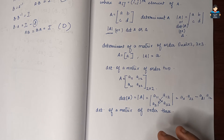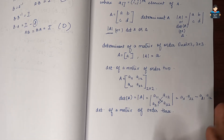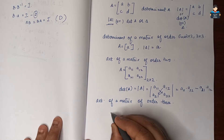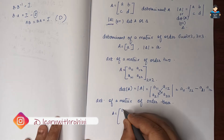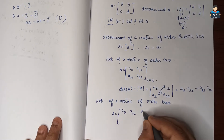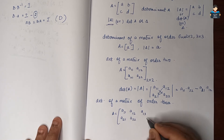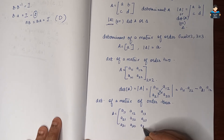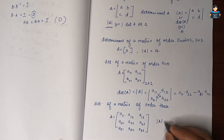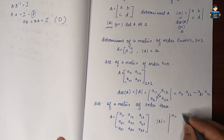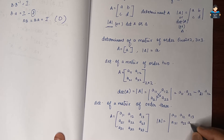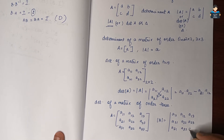We will expand along a particular row or column. For example, we will write a 3 by 3 matrix: A11, A12, A13; A21, A22, A23; A31, A32, A33.